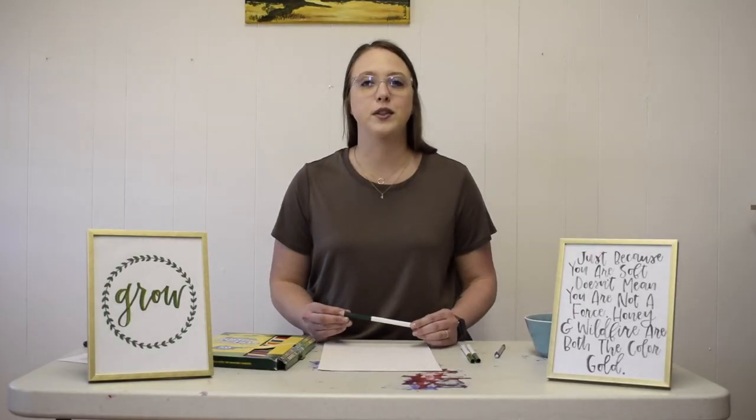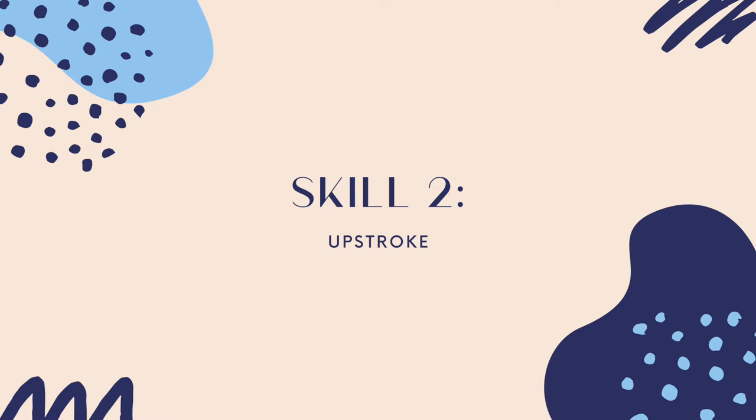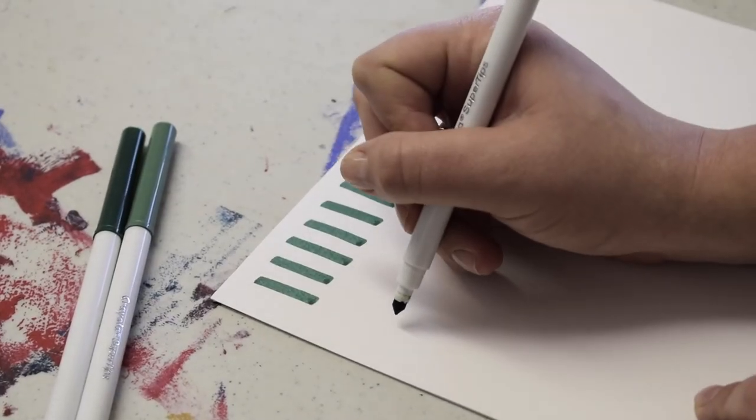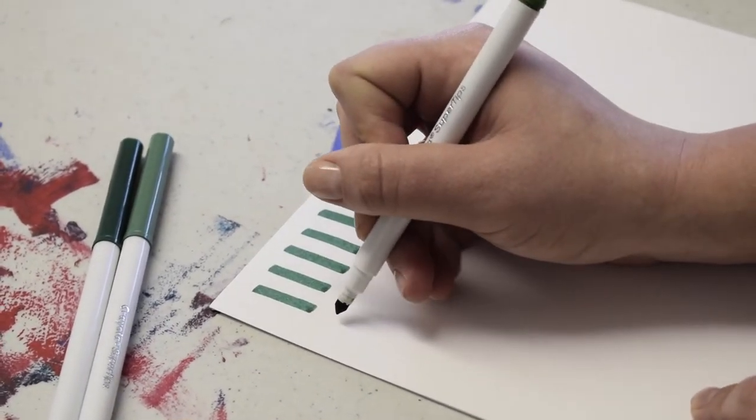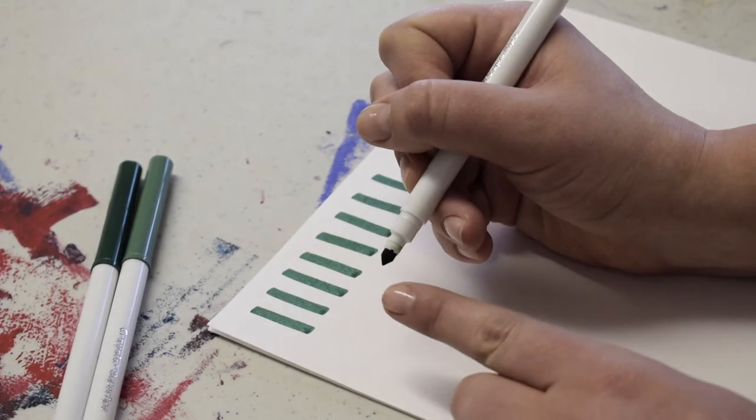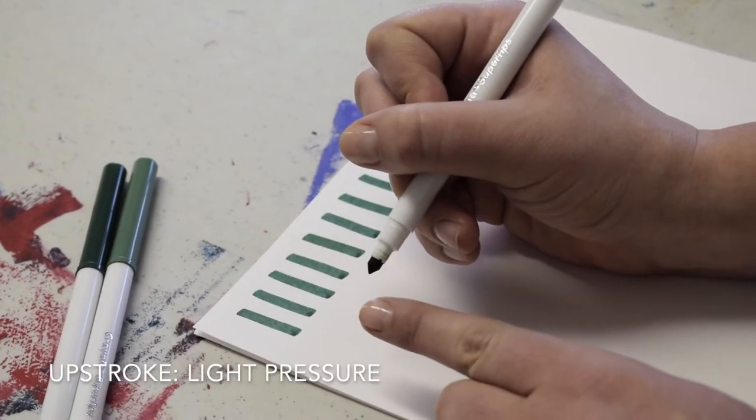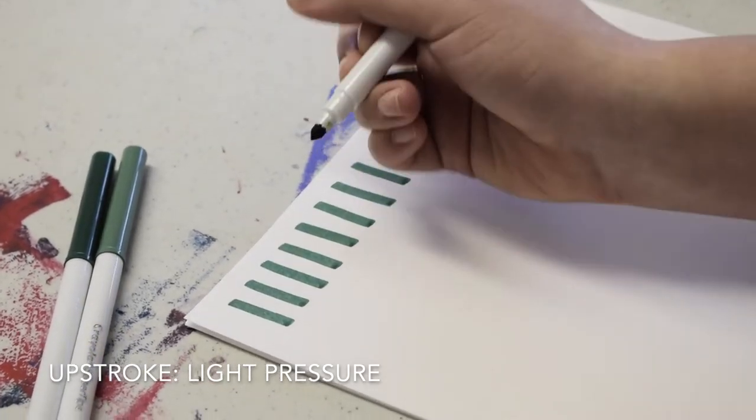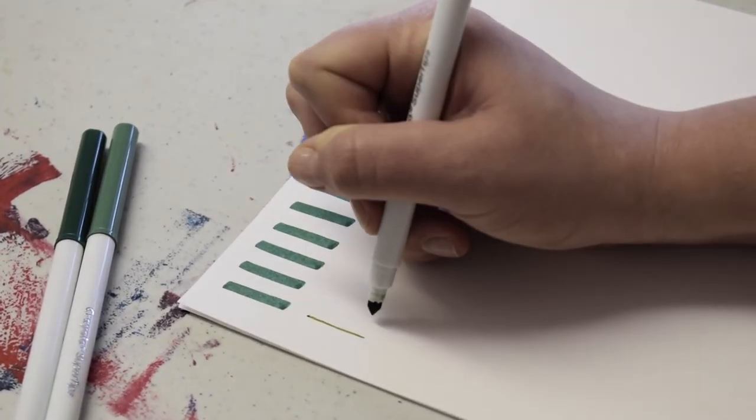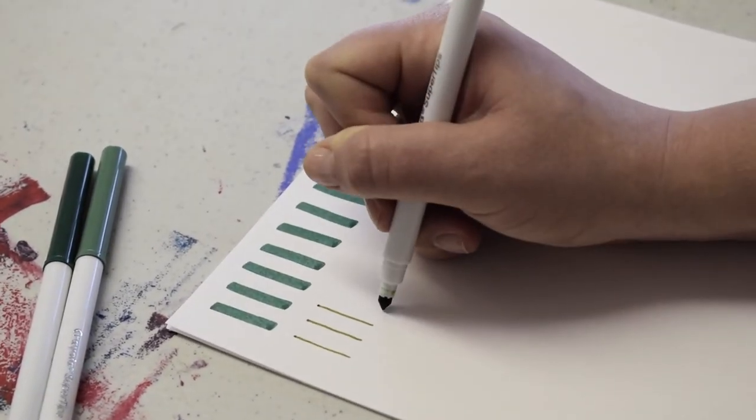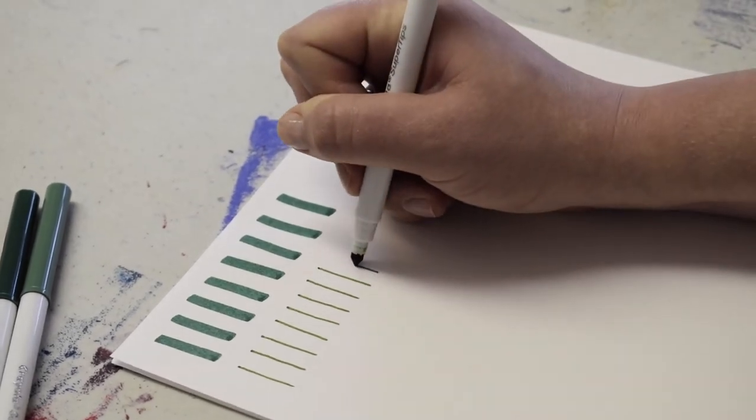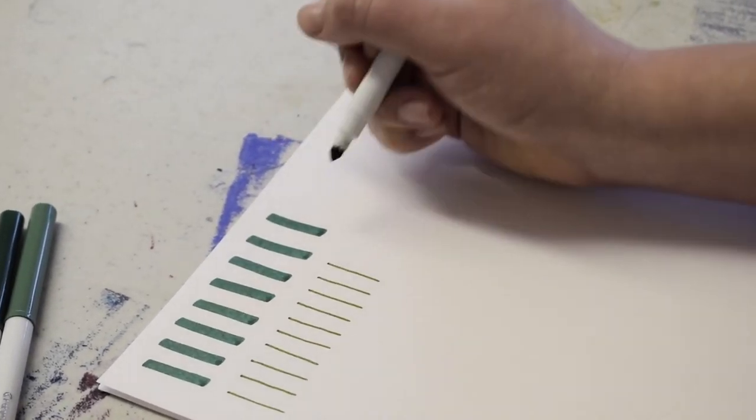The next skill we're going to learn today is the upstroke. Feel free to use the same color you have been or change it up. An upstroke is anytime our marker is moving up the paper. So we're going to be moving in the opposite direction. For this skill, we're going to use this great sharp point at the end of our marker. And we're just going to lightly graze across the paper, creating a really thin line. These thin lines require a steady hand and it takes a lot of practice. Again, let's practice these about 10 to 15 times so you can get the hang of it.